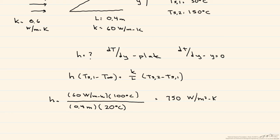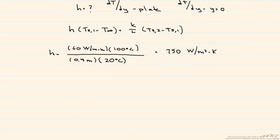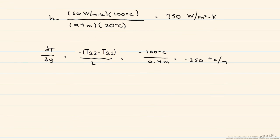The next thing that we want to find is the temperature gradient through the plate. Because the mode of heat transfer through the plate is conduction, we can write that our temperature gradient dT/dy is equal to minus (T2 minus T1) divided by that thickness of the plate, which is L. This temperature gradient is equal to minus 250 degrees C per meter.